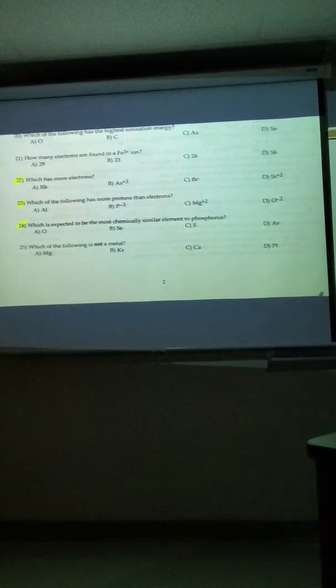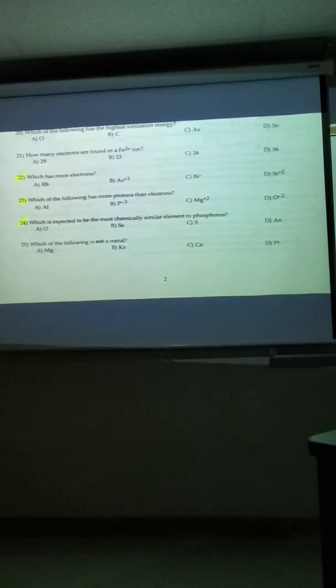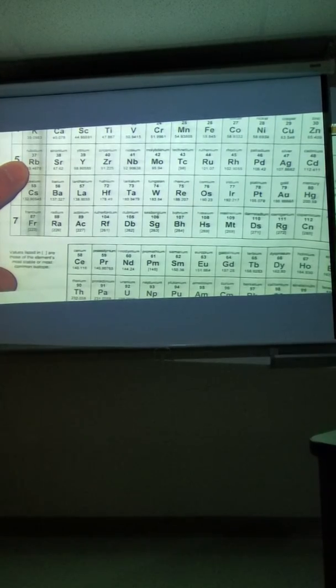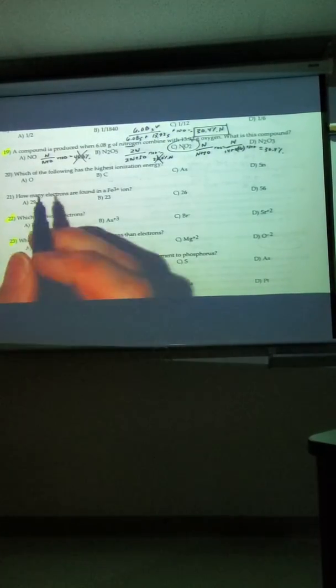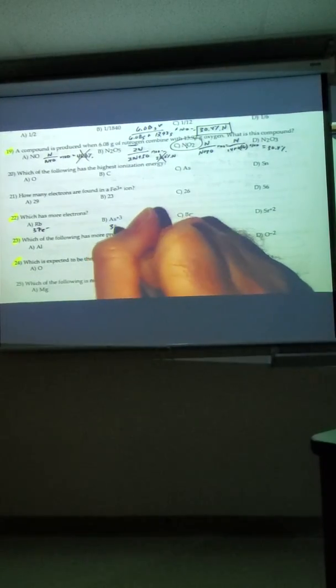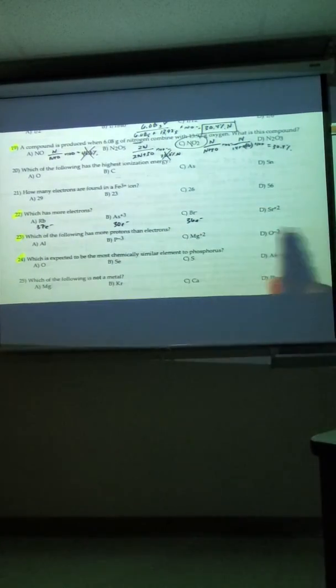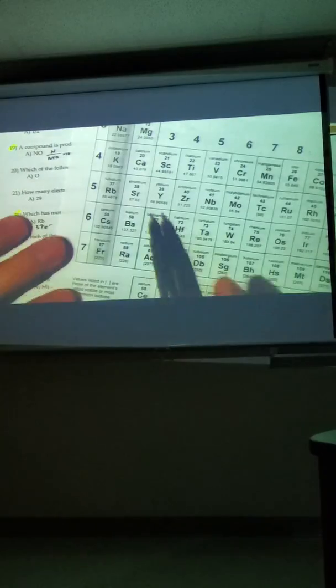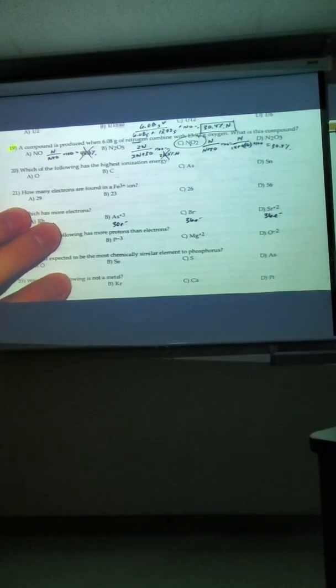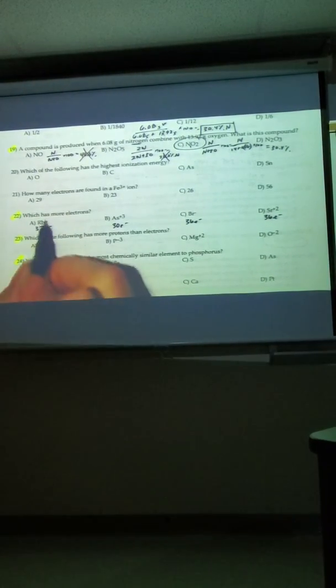Number 22 says, which one has more electrons? We need to go to the periodic table. Rubidium has 37 protons, so it has 37 electrons. Arsenic take away three, so arsenic, go back three, that's going to give you 30, like zinc. Bromide, which is Br negative, that's 35, add one, that's 36. So far the winner's still rubidium at 37. Strontium take away two. Strontium has 38, but when we take away two, we go back to 36. So that one's actually tied with bromide. So the winner there with 37 is rubidium.